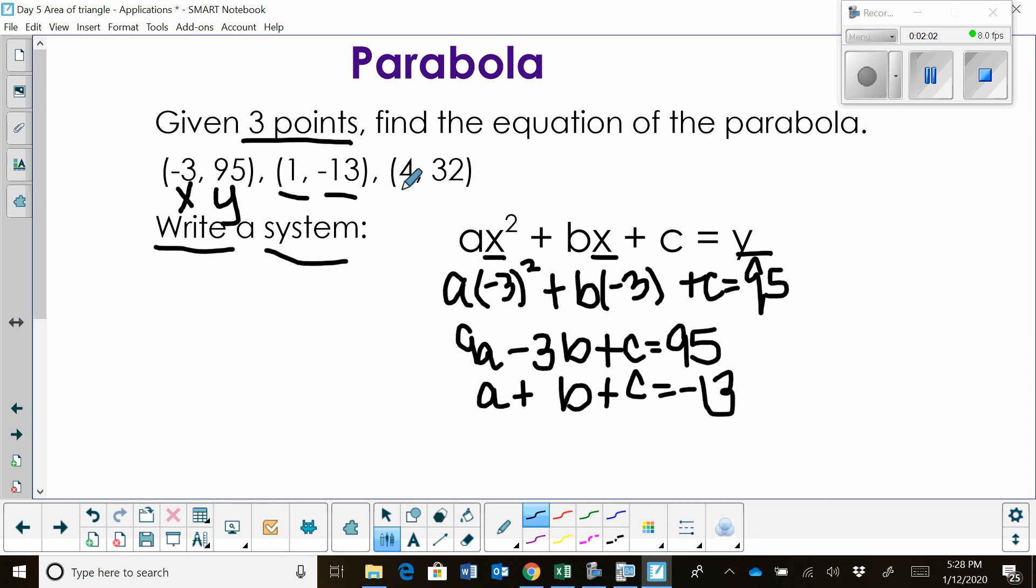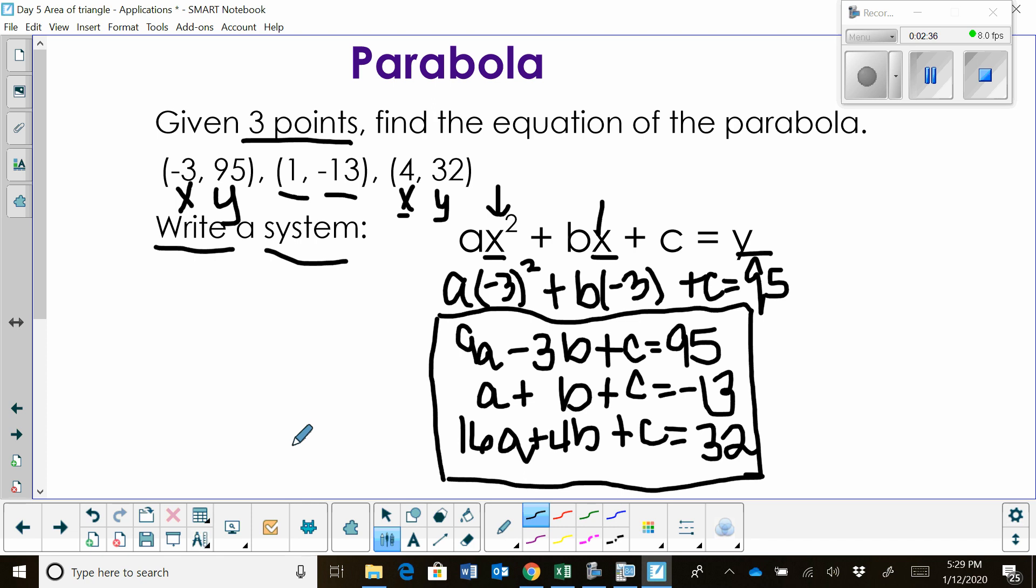Now, the last one, we're going to plug in 4 for x and 32 for y, so 4 right here. 4² is 16, so that's going to give us 16a, plus 4b, because we're plugging in 4 right here, plus c, and that's going to equal our y value, which is 32. So here is our system of equations. We have three variables, we have three equations, and we've done the first step, which is set up the system.